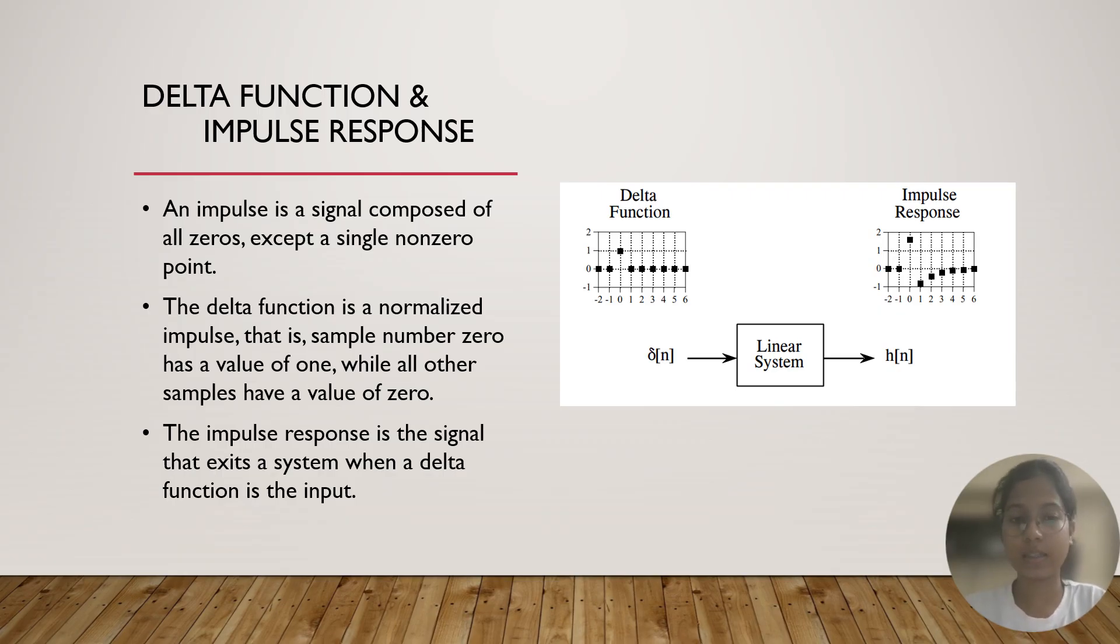The impulse response is a signal that exits the system when delta function is the input. It is basically when the delta function is the input of the system, it gives out an output of impulse response.